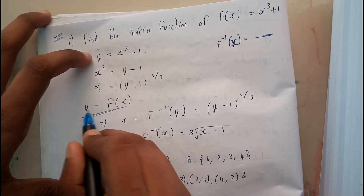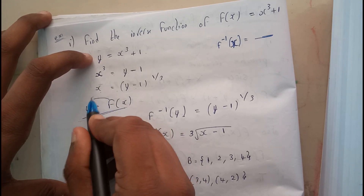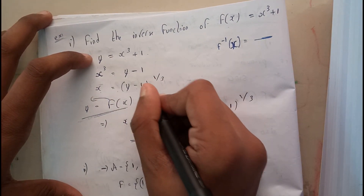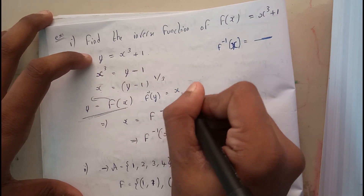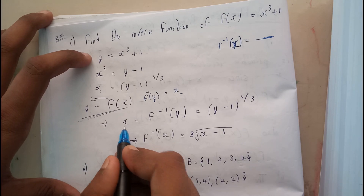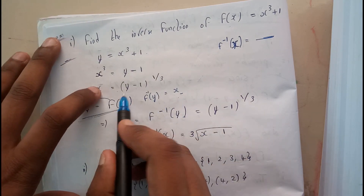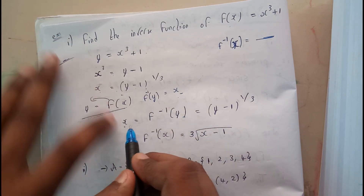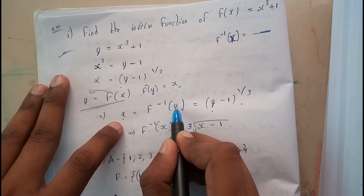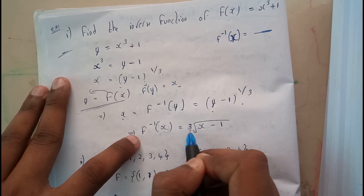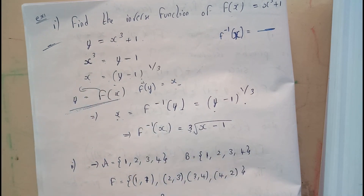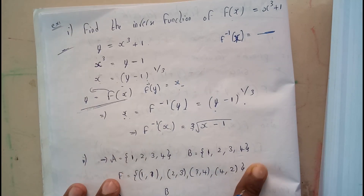If you have a doubt: y equals f of x, sending f of x to the other side gives f inverse of y equals x. This x value is equated with x equals y minus one to the power one by three. So replacing y with x, f inverse of x equals the cube root of x minus one. I hope you understood how the problem is solved.